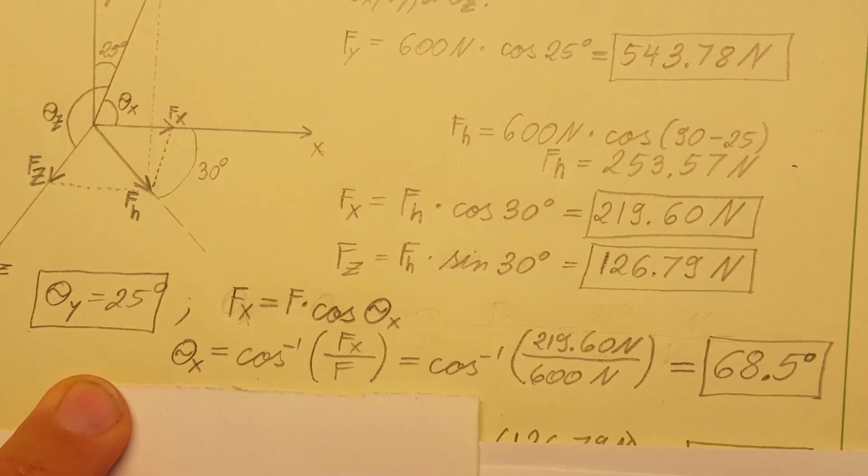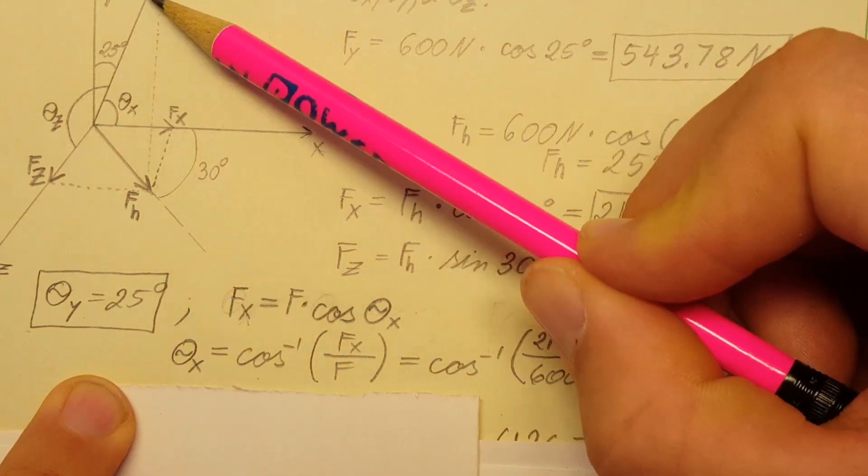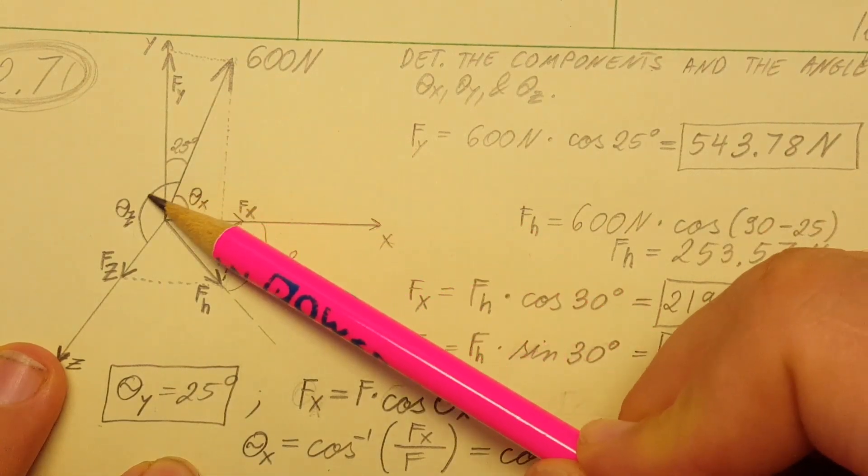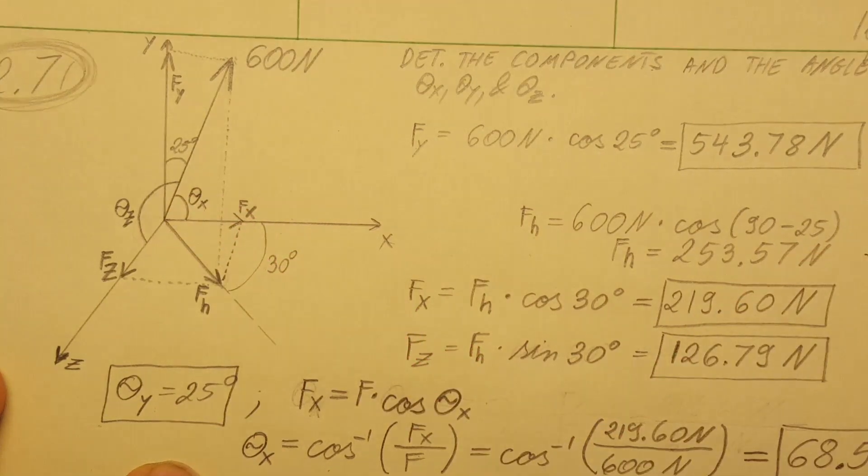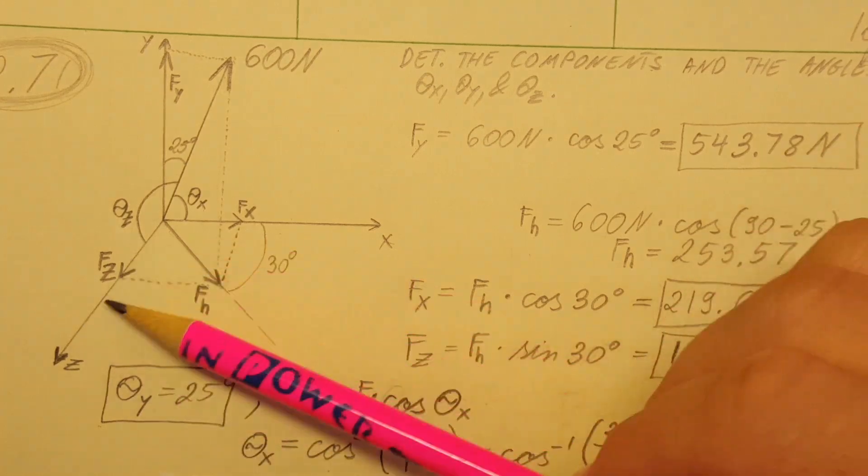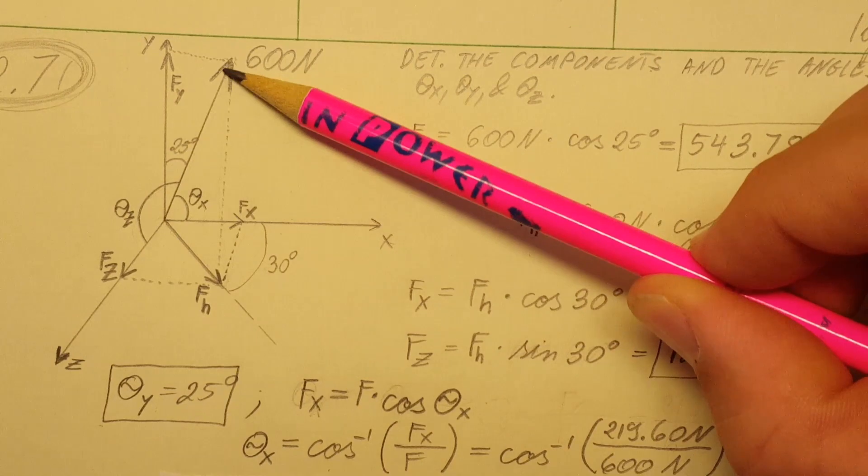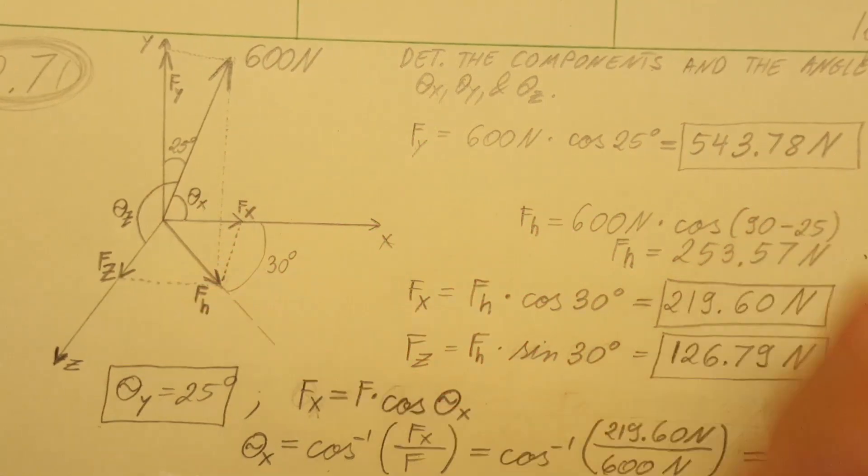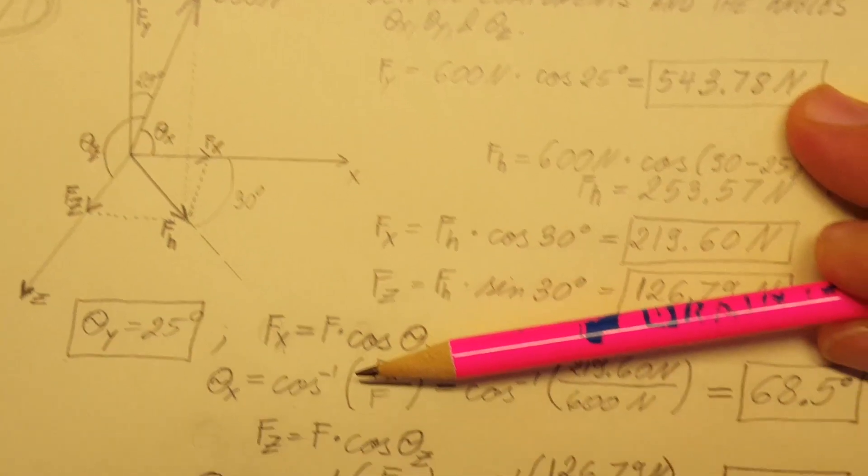Now for our final theta z, which will be from our f force coming down to the z axis, right here this one. For theta z, the triangle that we work with is this with the force, and then from the tip of the force coming down to the tip of fz. So from there we're going to rely on cosine again.